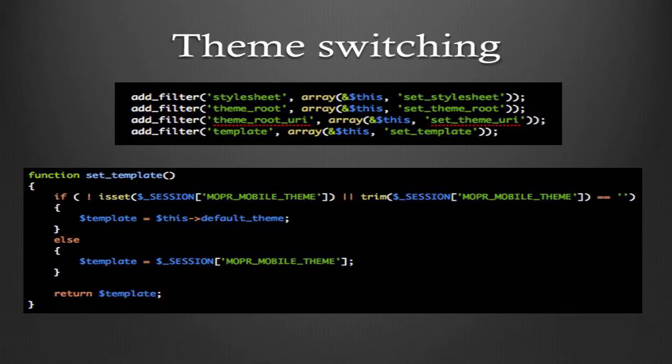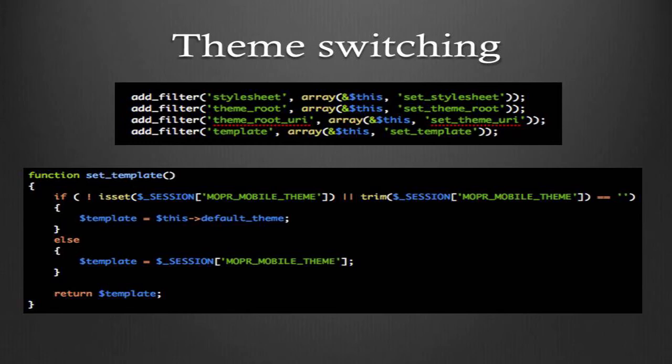For theme switching: once you've detected the device and know you're dealing with a mobile device and skipped through the cache, you need to show the person a mobile theme. WordPress gives us four filters that are really easy to implement - you basically just change out the URL of the template you're dealing with and switch it to your mobile template. When the person's on a mobile device, it'll display the mobile theme.